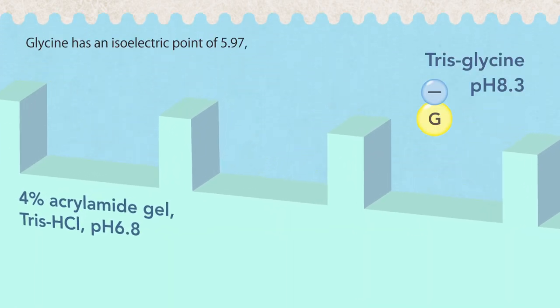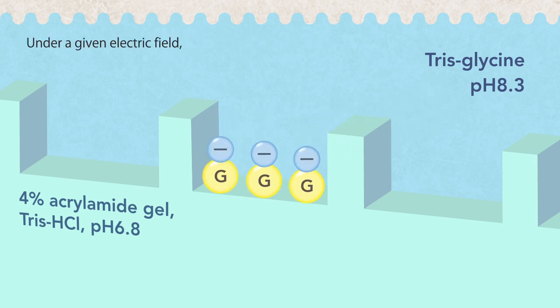Glycine has an isoelectric point of 5.97. Thus, it carries negative charge in the electrobuffer where the pH is 8.3.